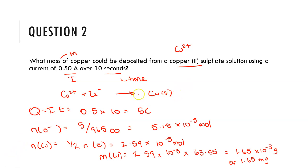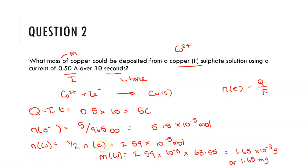First, use Q equals IT: 5 amps times 10 seconds gives 5 coulombs of charge. Then use n of electrons equals Q divided by F: 5 divided by 96,500 gives 5.18 times 10⁻⁵ moles of electrons. Since Cu²⁺ requires 2 electrons per copper atom, multiply by one half to get 2.59 times 10⁻⁵ moles of copper. Multiplying by the molar mass of copper gives 1.65 times 10⁻³ grams, or 1.65 milligrams of copper deposited.